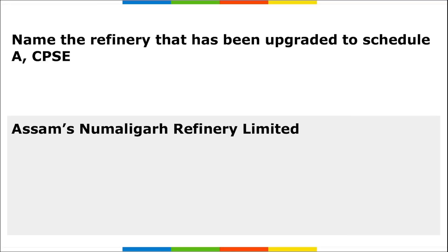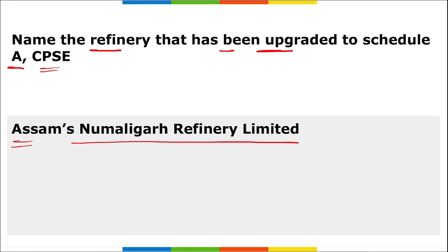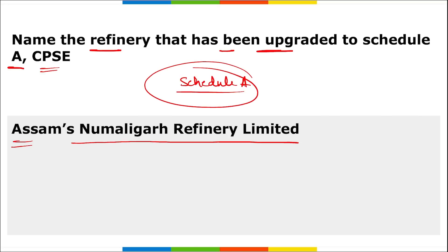Which refinery has been upgraded to Schedule A CPSC? It is Assam's Numaligad Refinery Limited. Schedule A CPSEs are the largest and most important — the highest-ranked CPSEs, known for excellent performance, high profitability, and strategic importance. They have greater financial autonomy and can make investment decisions up to a certain limit without requiring approval from the central government.